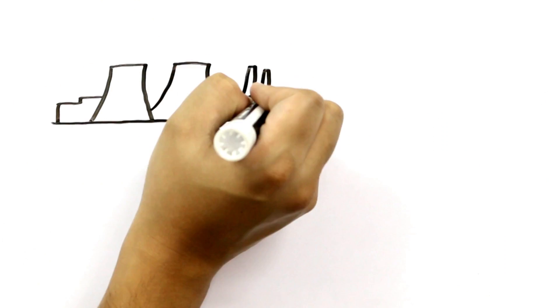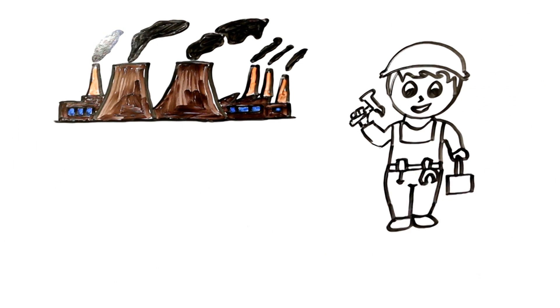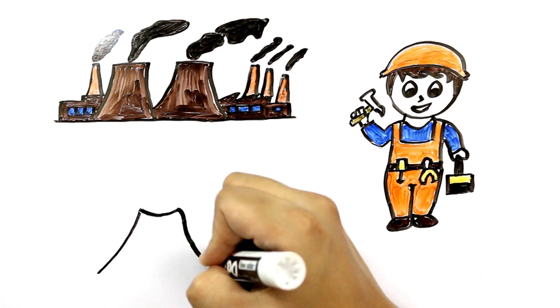In Earth's history before the industrial revolution, Earth's climate changed due to natural causes not related to human activity. These natural causes are still in play today.